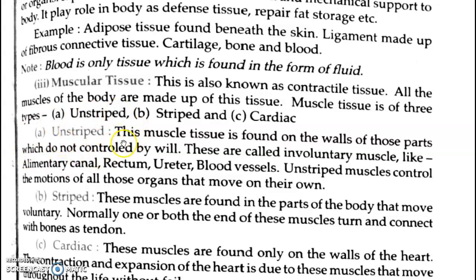Unstriated muscle fibers are found on the walls of those parts which are not controlled by the will — these are called involuntary muscles. For example, the digestive system works on its own; you cannot stop it by will. They are not controlled by your own will.